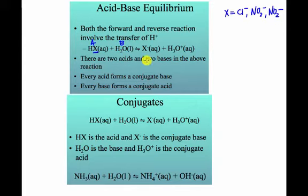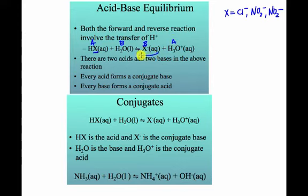If you think about this side of the reaction, since this lost the hydrogen ion, it's left behind with a negative ion, this here would be considered a base, and now this has an extra hydrogen ion it can give up. So we can think of this as being an acid and a base reacting in this direction. So you've got these two acid-base reactions going on simultaneously. These are what are called conjugate pairs.